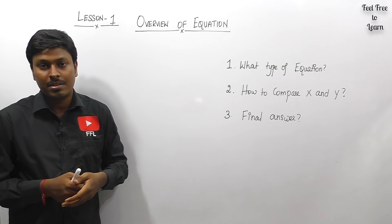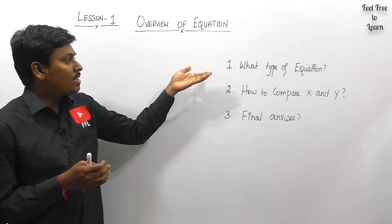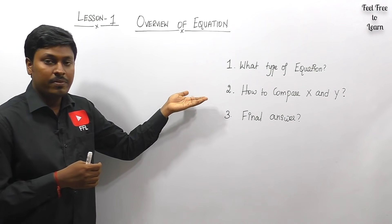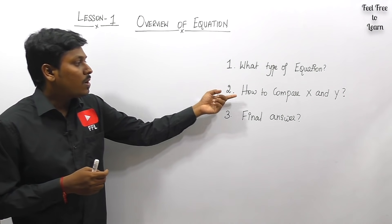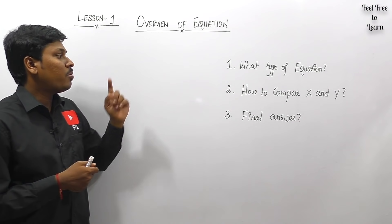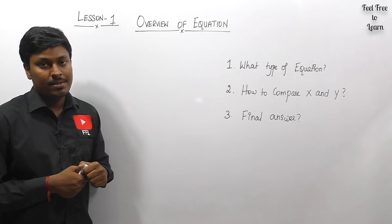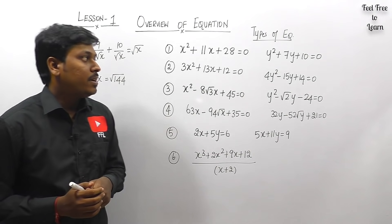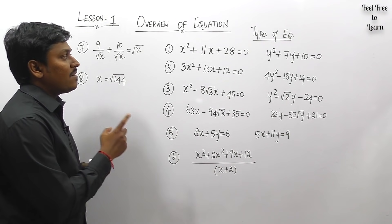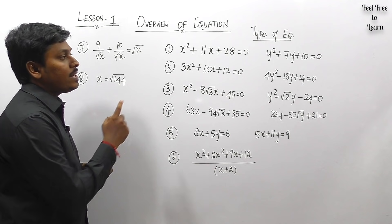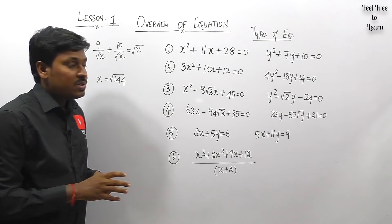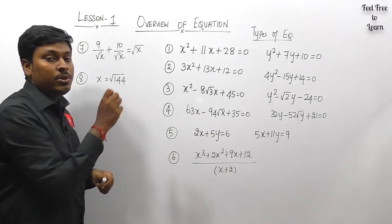Initially, by seeing an equation you should determine whether it is quadratic, linear, or homogeneous — there are different types. After identifying the equation type, I will teach you how to compare x and y values and how to state the final answer. Let me move on to the different types of equation questions. Question number one: x² + 11x + 28 = 0, and y² + 7y + 10 = 0.